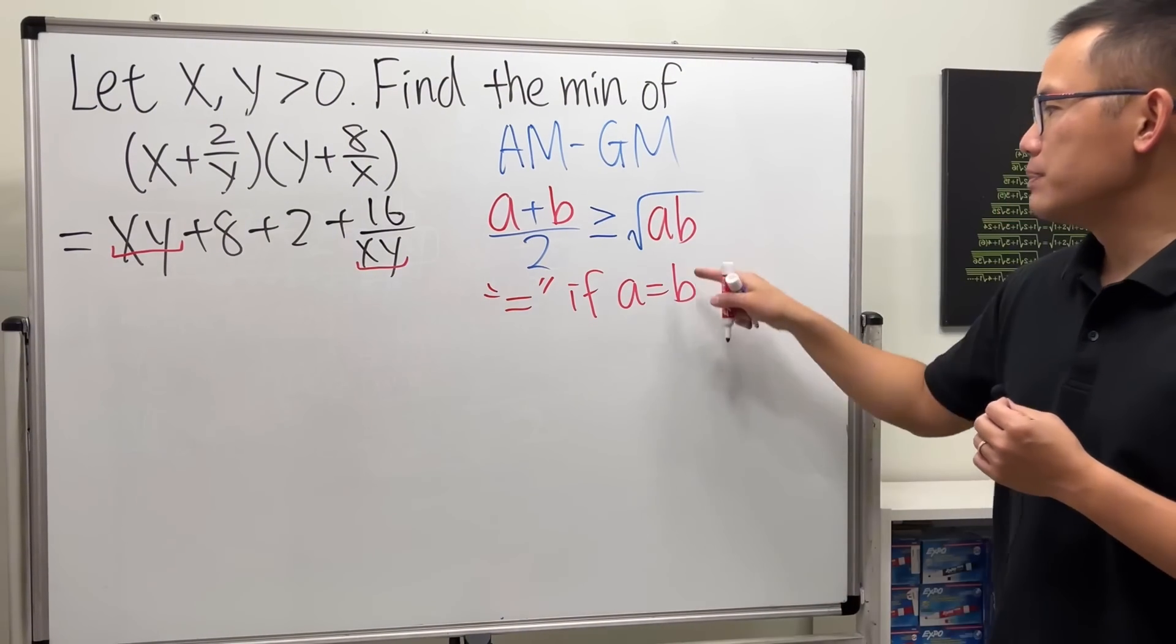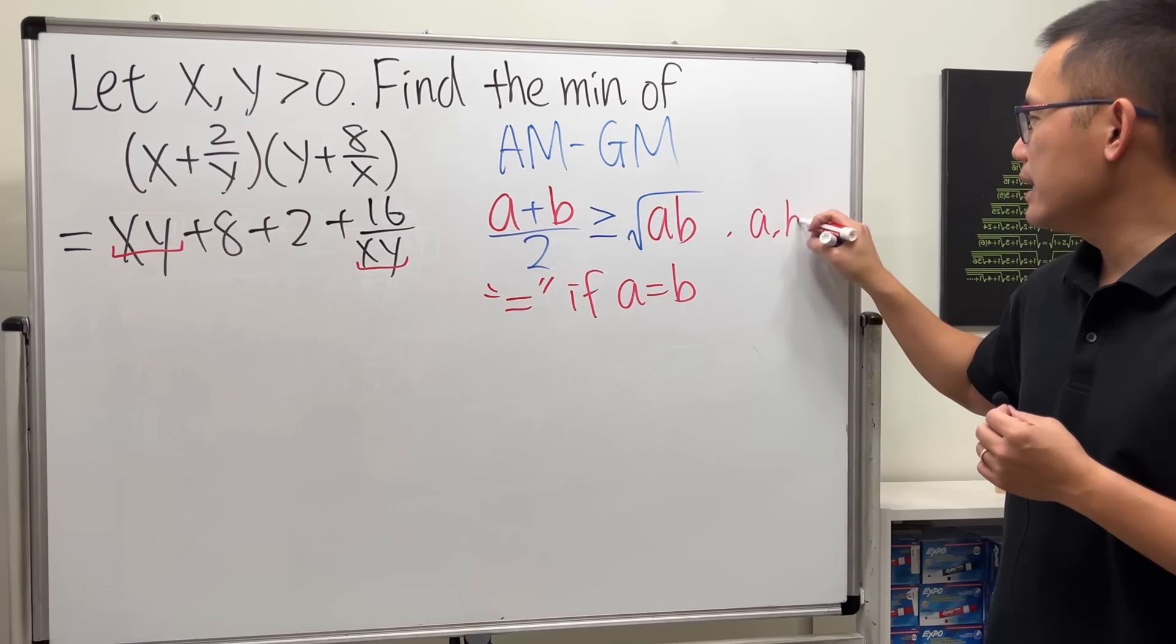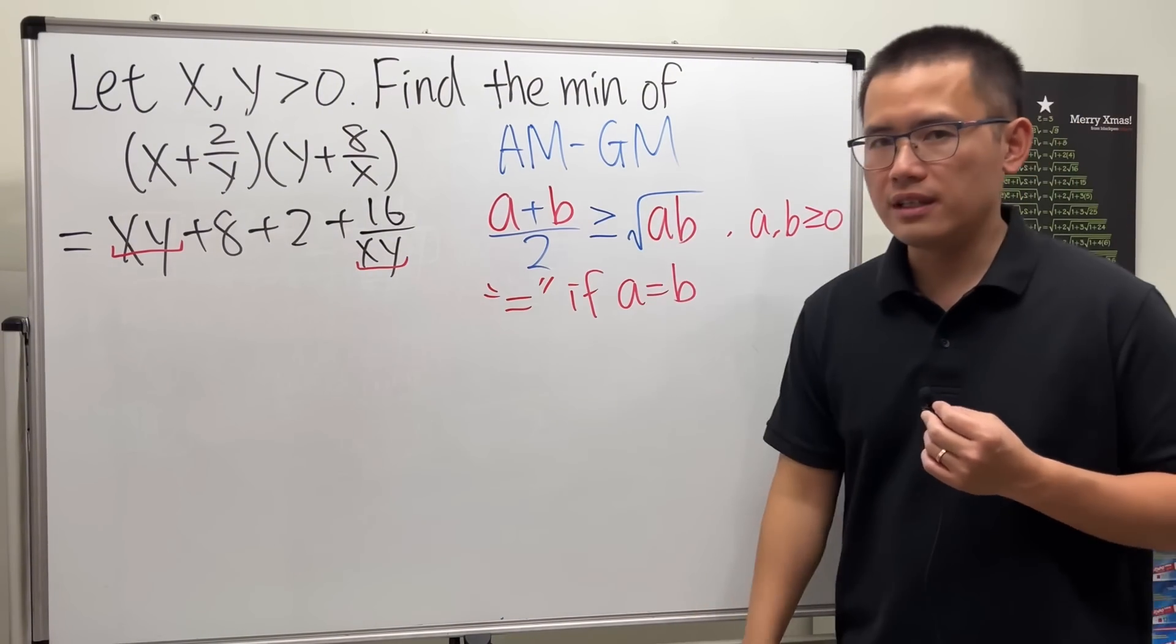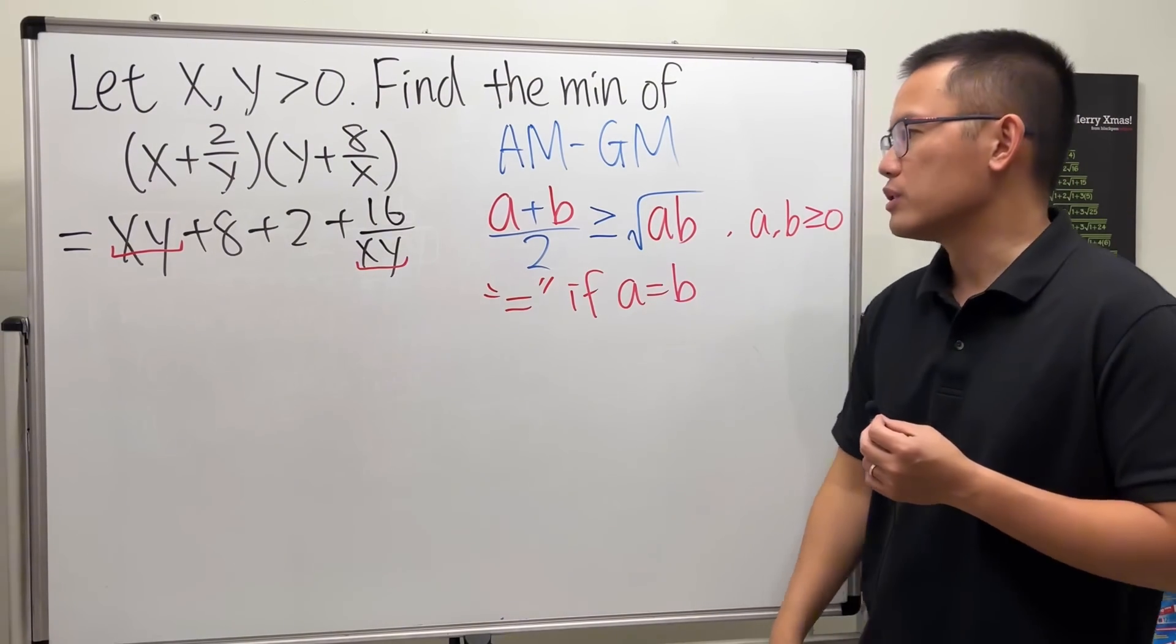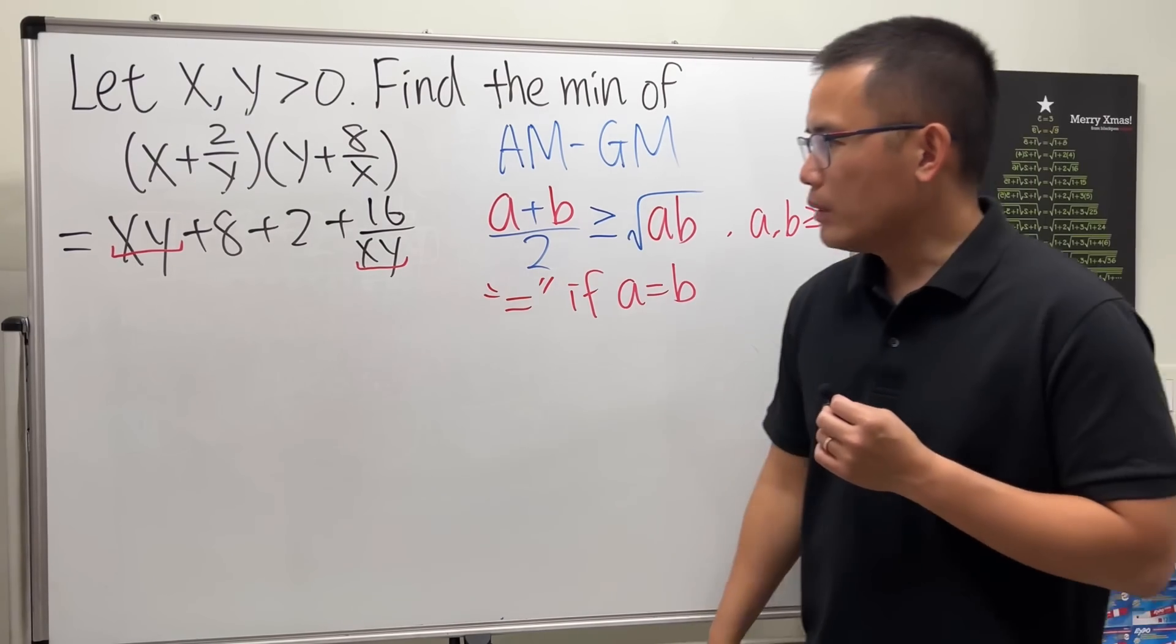And of course, because the right-hand side we have the square root, we should also mention that a and b should be greater than or equal to zero. Otherwise, square root of a negative number gets you an imaginary result, and that's not what we want.